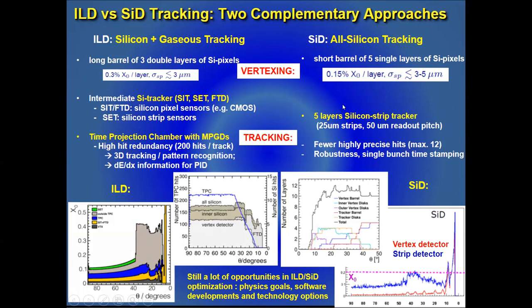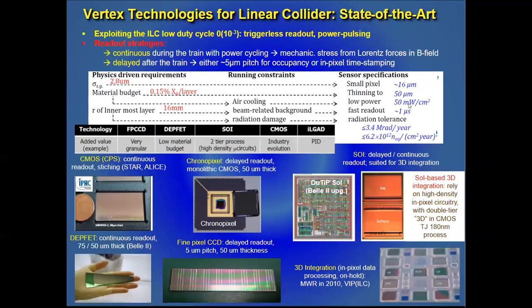In the case of ILD, tracking consists of a silicon tracker and time projection chamber, which provides a large number of measurement points per track and also dE/dx information for particle identification, which is important for the ILC. The silicon tracker provides a few tens of more precise hit points. The key elements for precision at the ILC are momentum resolution and spatial resolution, which strongly depend on the material budget.